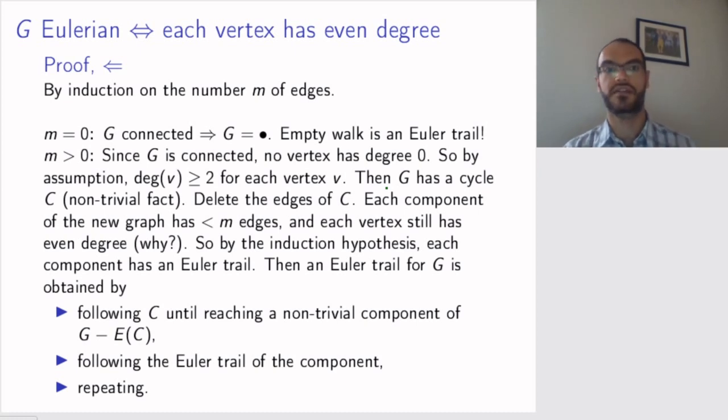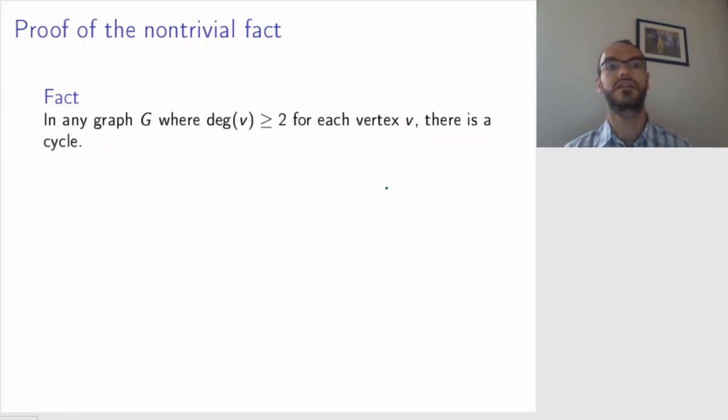So, let's check this detail that it is indeed true. The fact I claim now is that in any graph G, connected or not, Eulerian or not, if the degree of each vertex is at least two, then there is a cycle.